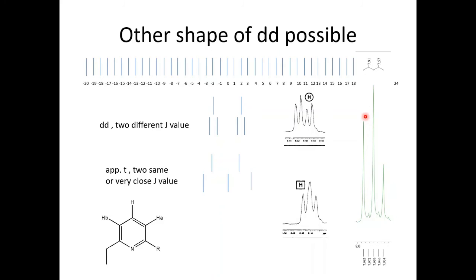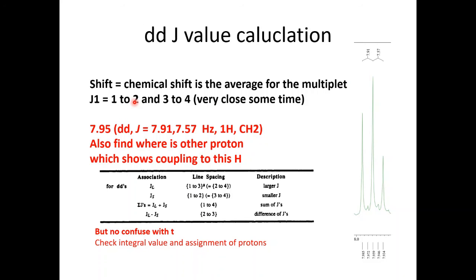This is the software-calculated J value. When you click on this peak and the next one, you will get 7.91. When you click on the other peak and press J, that will calculate 7.57. The main thing is how you report the chemical shift. Chemical shift reporting for this type of molecule is very simple — just write down the chemical shift as 7.95. You can take the center of the peak or the average of the external peaks. So it's like doublet of doublet, J equals 7.91 and second J value 7.7, sometimes 7.9, 7.8, or 7.5 — don't worry about small variations.